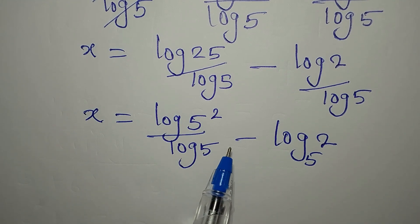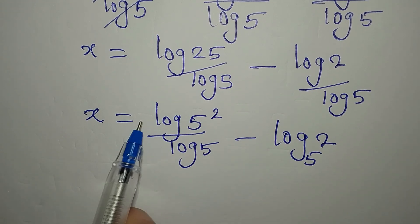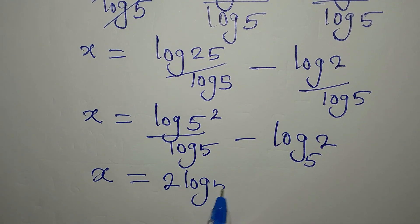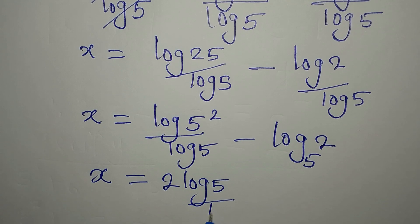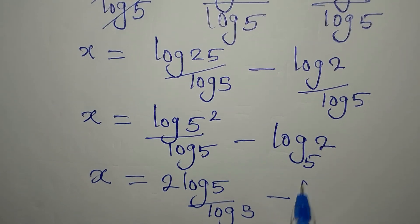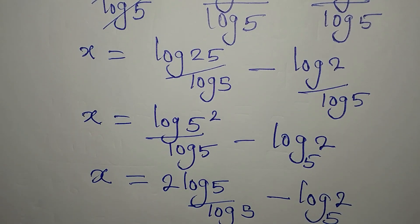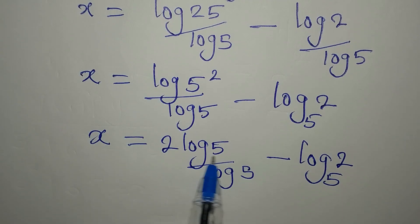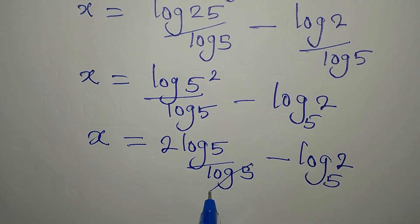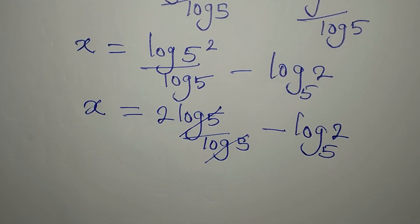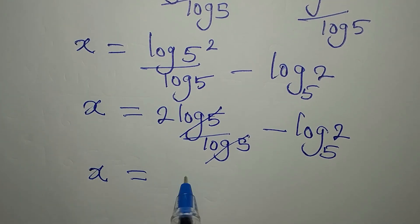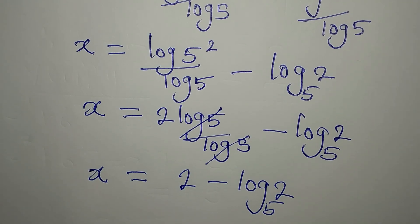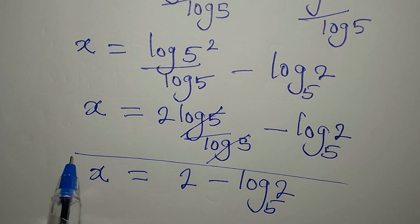There's a law that says the power should always go in front, so x will be 2 log 5 divided by log 5 minus log 2 to the base of 5. Since we are multiplying, this cancels, and x will now be 2 minus log 2 to the base of 5. This is the value of x.